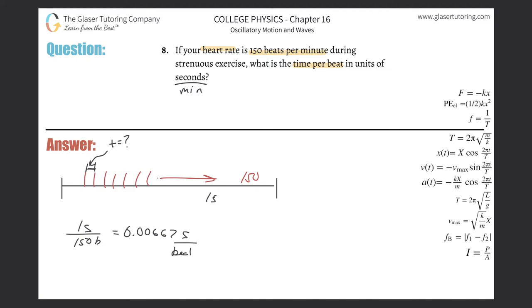That's what we just found. That should make sense. If there's 150 beats in a second, then there should be a small fraction of seconds per beat. Each beat takes a fraction of a second.